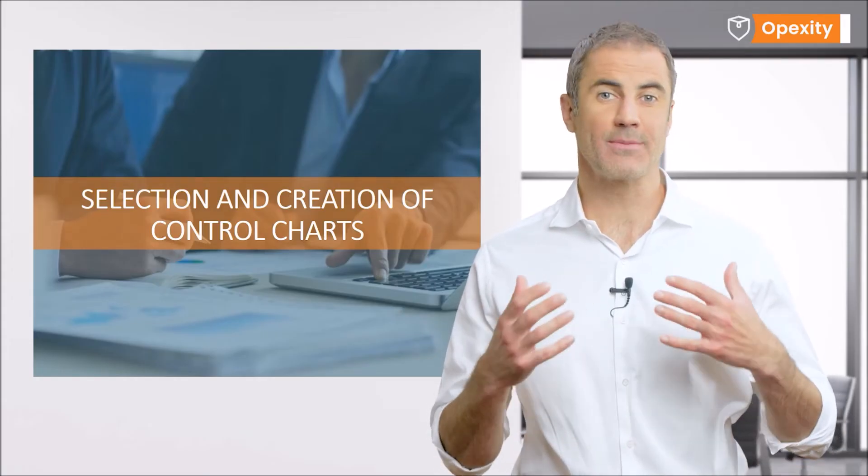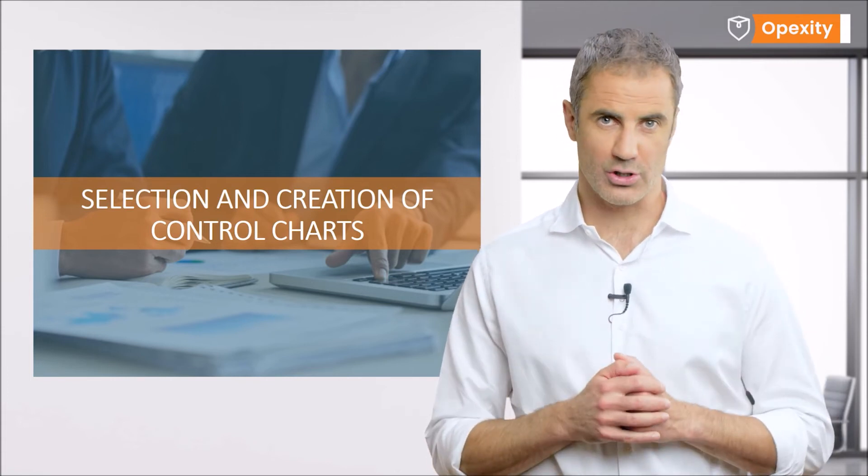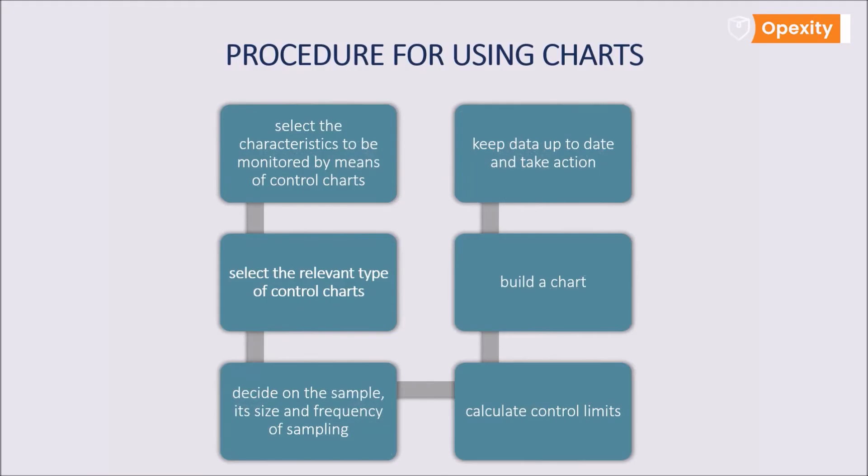Let's move on to discuss the subsequent issue, which is the selection and creation of control charts. In order to apply the control charts to the product, the following procedure must be carried out. Select the characteristic to be tested on the product or process. This could be, for instance, the weight of the product or an important dimension of the product, such as the length of an item. Select the right type of control chart for the chosen characteristic. The characteristic examined will determine the type of control chart.